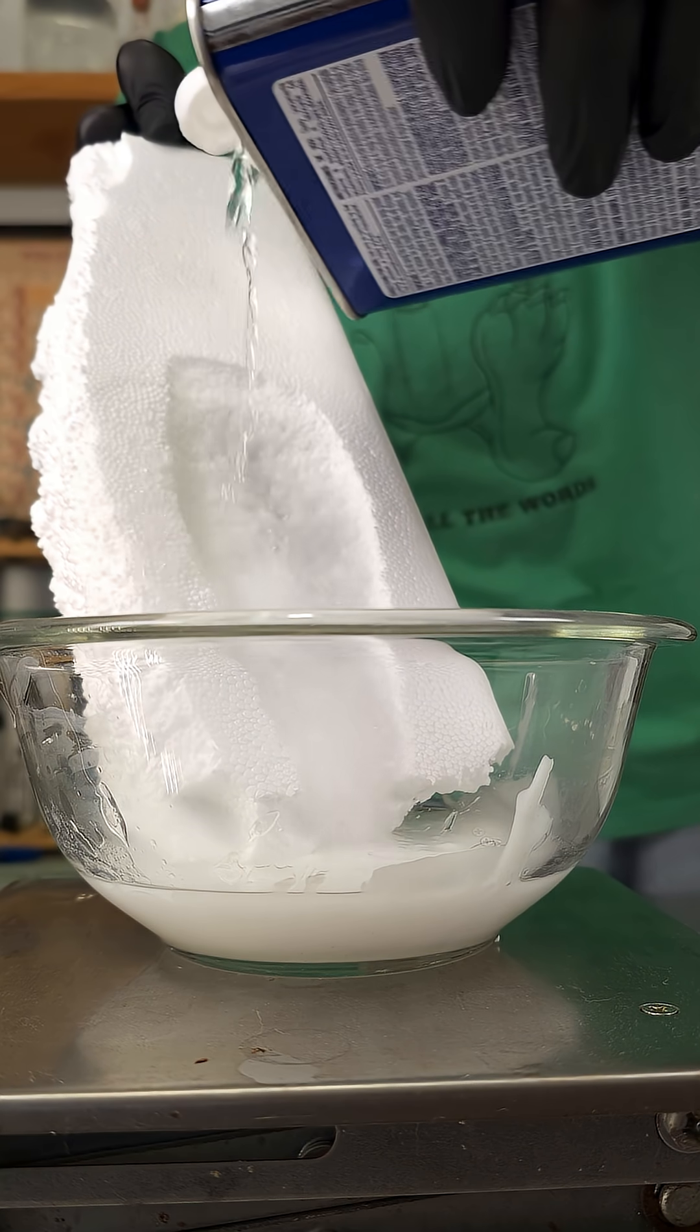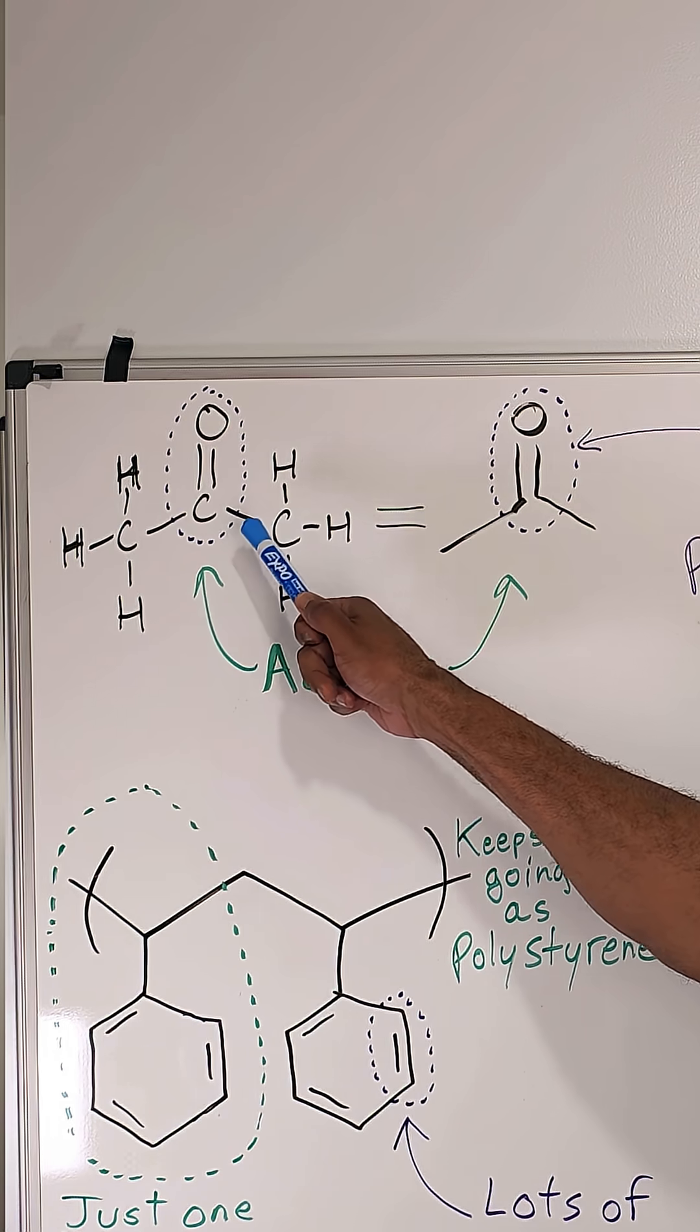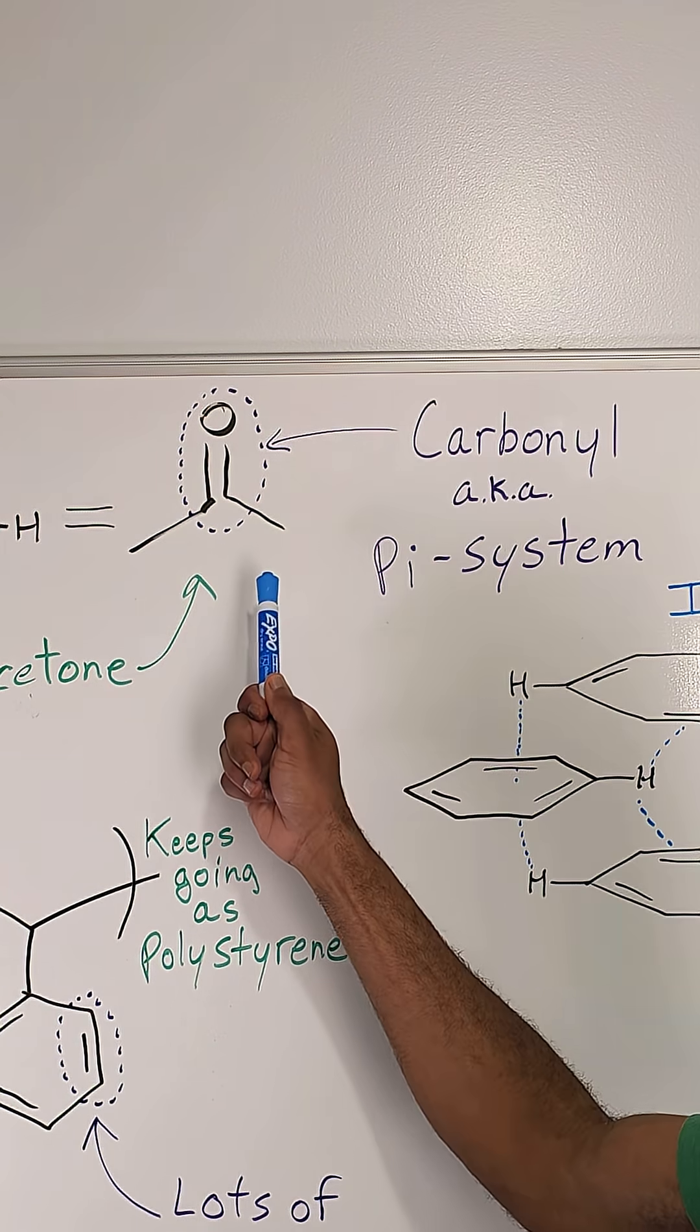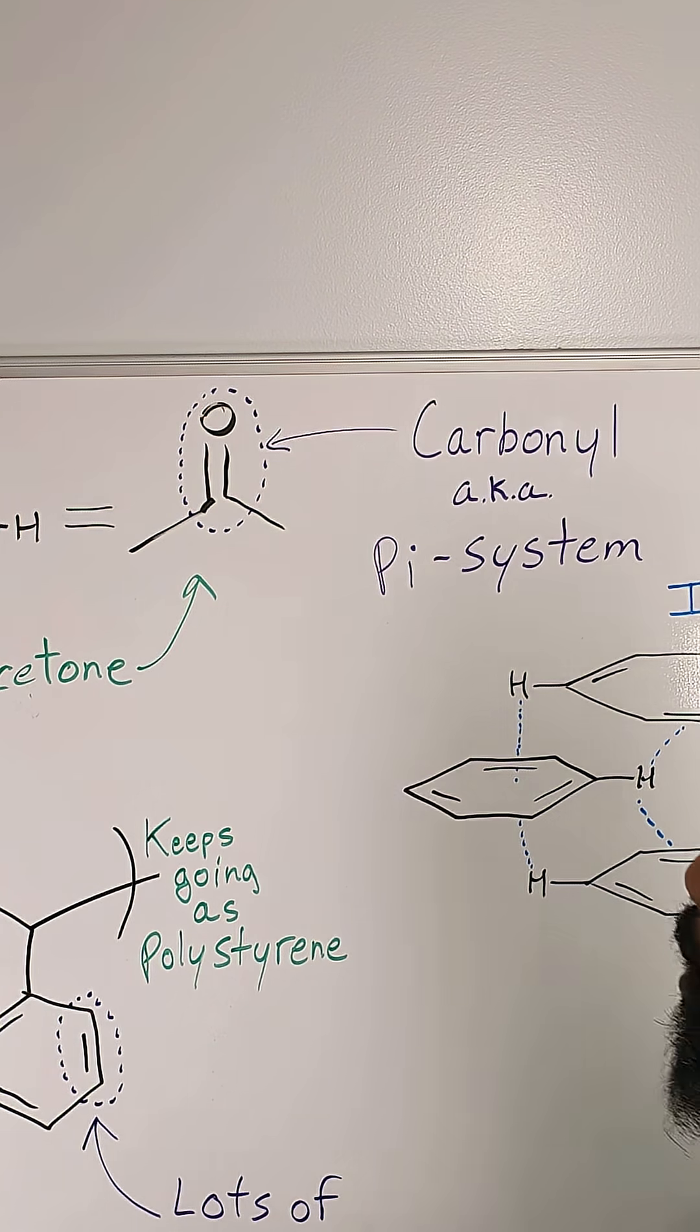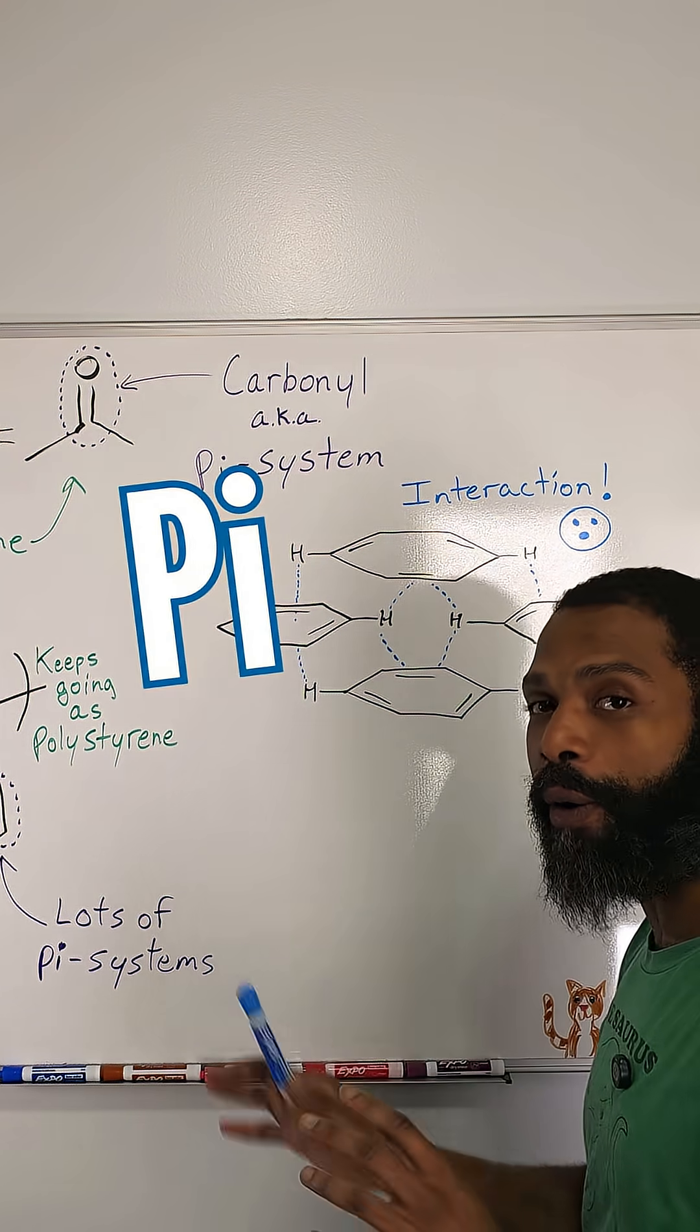While I can't tell you for sure why acetone does this, I have a theory that it has to do with the carbonyl in acetone, what's often called a pi system in chemistry. These pi systems can interact with each other in what are called pi-pi interactions.